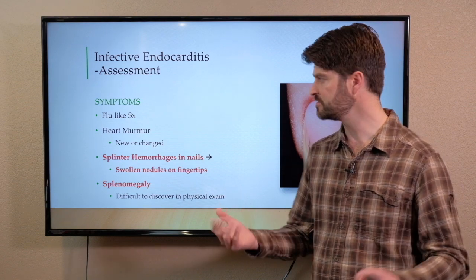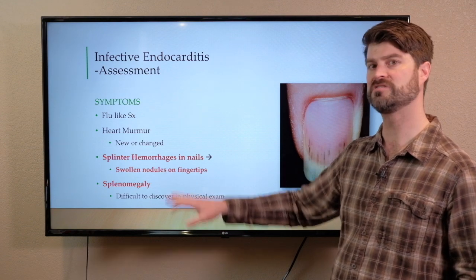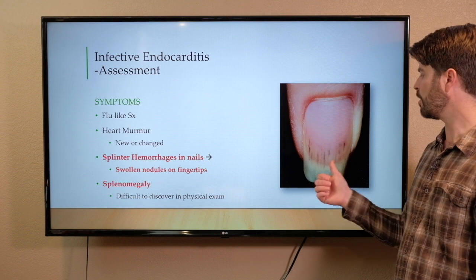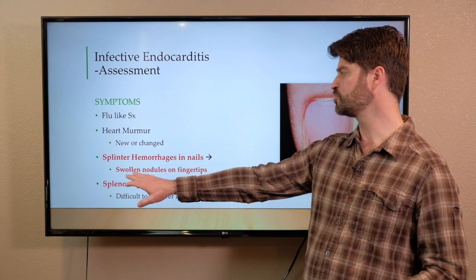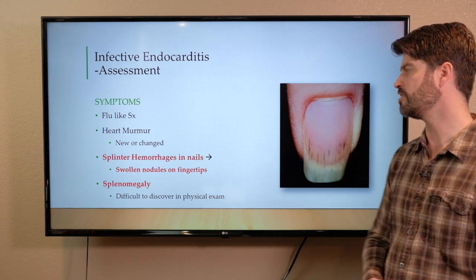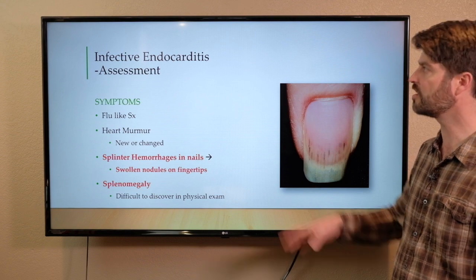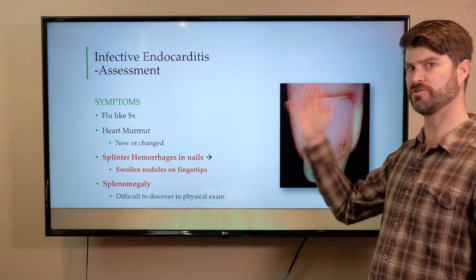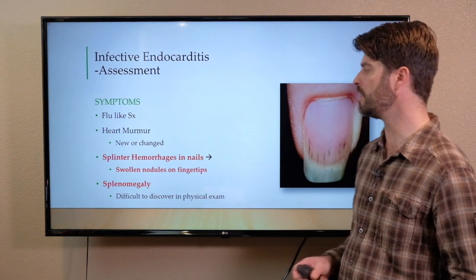Bacterial growth can occur on any of the valves, so we want to listen for heart murmurs. Splinter hemorrhages in the nails — those striated hemorrhages — are an odd peripheral finding we do tend to see with infective endocarditis. Patients can also develop swollen nodules on their fingertips, occurring over the knuckles or distally on fingers. These raised papule-type things are called Osler nodes. Additionally, splenomegaly can happen as a result of continuous exposure of the blood to a bacterial or other pathogen.